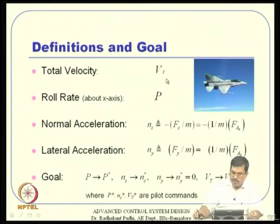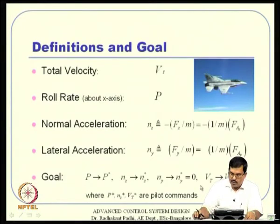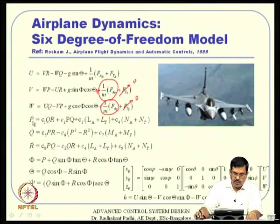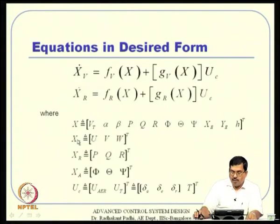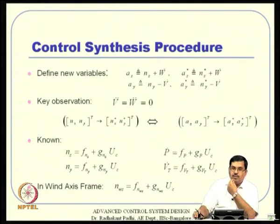Once the objectives are understood, we synthesize the controller. In the typical approach, nz and ny are converted to equivalent q* and r* in an outer loop, and then p*, q*, r* are used to compute control surface deflections. However, we will follow a slightly alternate approach and compare results from both approaches later.